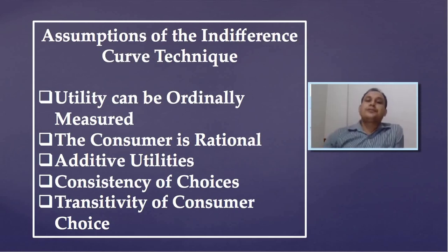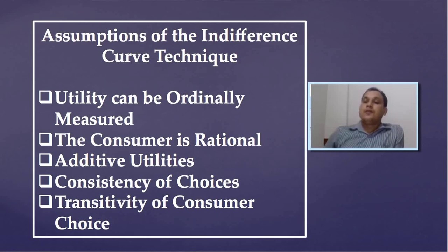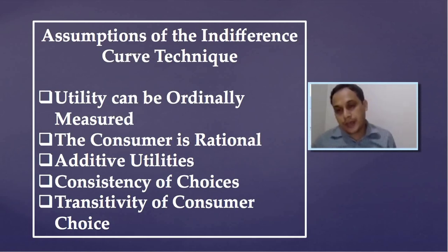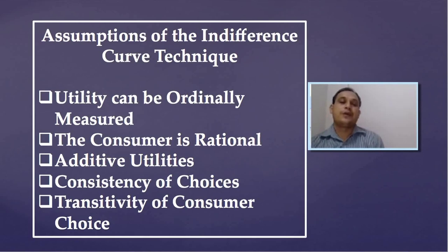Next is consistency of choices, meaning a consumer must be consistent in their choices. If a consumer chooses combination A over B in one period, they will not choose B over A in another period. Symbolically, if A is greater than B in one situation, it must apply to all other situations as well.